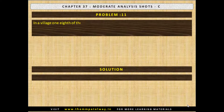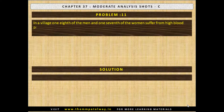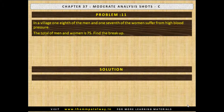Problem No. 11. In a village, one eighth of the men and one seventh of the women suffer from high blood pressure. The total of men and women is 75. Find the breakdown. The solution is there are 40 men and 35 women.